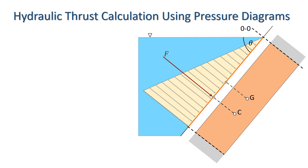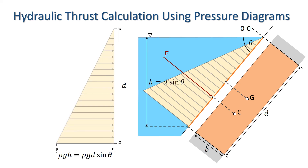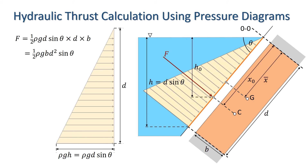Often, we have pressure diagrams that go all the way to the free surface of the fluid. In this case the calculations are simple, since the centre of gravity is halfway down the surface, and since the centre of gravity of a triangle is one-third of its height from the bottom, the centre of pressure will be two-thirds of the way down the surface. The pressure diagram is a triangle with base length rho G D sine theta and height D. The magnitude of the force is the volume of the pressure prism, so F equals one-half rho G D sine theta times D times the width B, which equals one-half rho G B D squared sine theta. The line of action of the force will be at a depth of two-thirds of H, i.e. two-thirds times D sine theta.